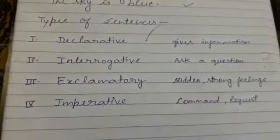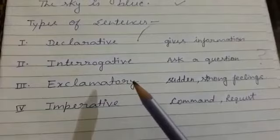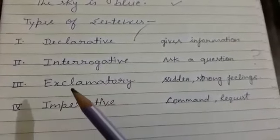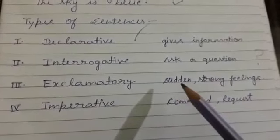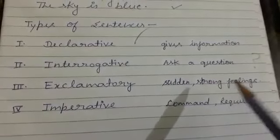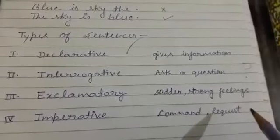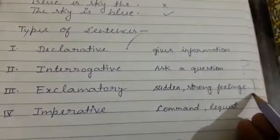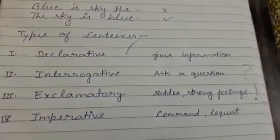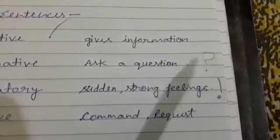Now, the third one: exclamatory sentences. Exclamatory sentences show sudden and strong feeling or emotions. And at the end of such type of sentences, we always put an exclamation mark. What do we always put? Exclamation mark.